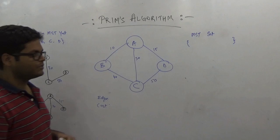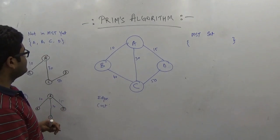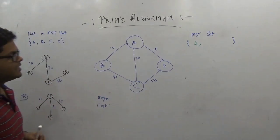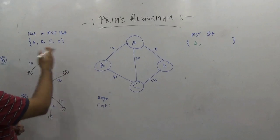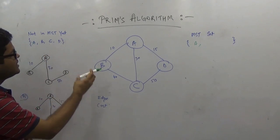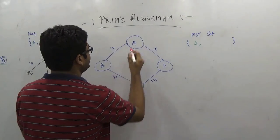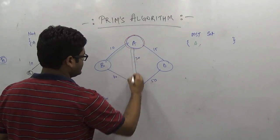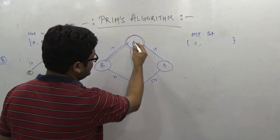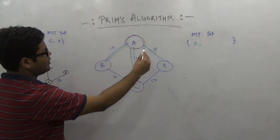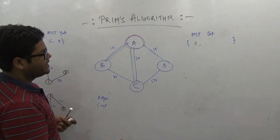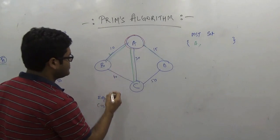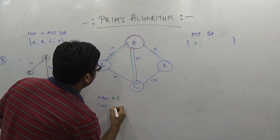Let us go through this algorithm step by step. We begin with vertex A and include it in our MST set. Now we consider all edges that connect A to the other vertices: B, C, and D. A is connected to B by edge AB, to C by AC, and to D by AD, with costs 10, 30, and 15 respectively. We can see that AB has the minimum cost, so we pick this edge and include it in our MST.